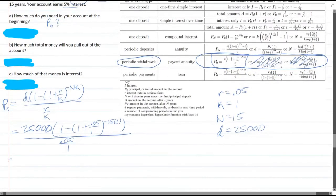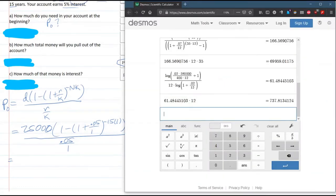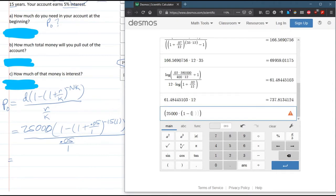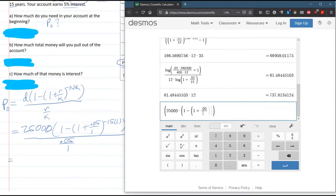Alright, so we're ready to type this in the calculator. 25,000, if you want, you can put the whole numerator in a parenthesis. 25,000 times, inside that parenthesis, times parenthesis 1 minus parenthesis 1 plus 0.05 divided by 1. You do not need to do divided by 1. I'm just typing in exactly as it is on my paper.